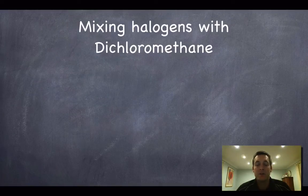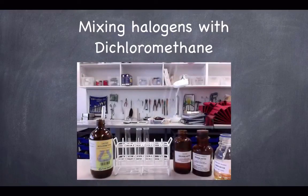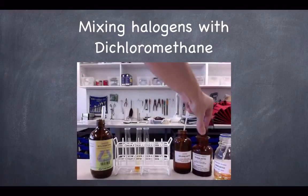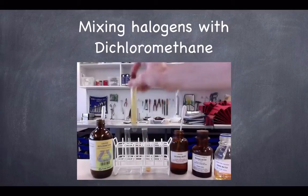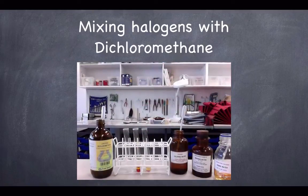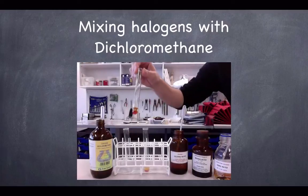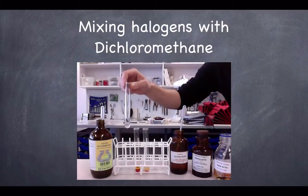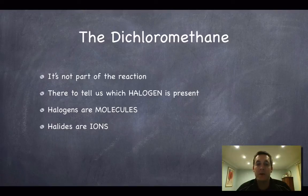The first job is to mix the halogens with dichloromethane, so let's have a look at that part of the experiment. Having put a bit of dichloromethane into each of the tubes, we put a bit of chlorine water, a bit of bromine water, and a bit of iodine water into each one, give them a shake, and see what colour they are. The iodine one is quite a nice shade of pink-purple. The bromine is reddish-orange, though depending on how intense it is it can look quite yellow. And the chlorine is most definitely colourless. It's really important to remember that the dichloromethane is not part of the reaction.